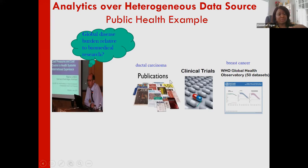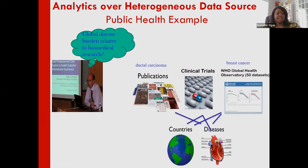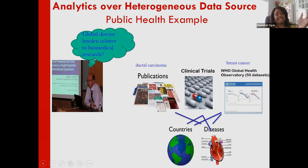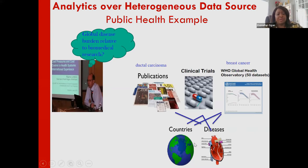Different applications may use different terminology — one might say 'ductal carcinoma' whereas the WHO Global Health Observatory uses 'breast cancer.' To aggregate this in any meaningful way, we need to reconcile not just the structure but the terminologies. For example, I need to know that ductal carcinoma is a type of breast cancer. Some studies may have a geographical context, and if we know a state is part of a country, we can reason about how to combine information.